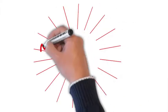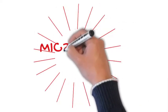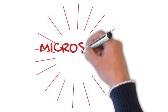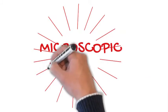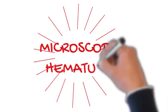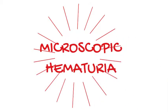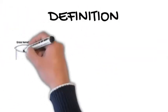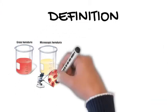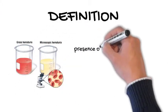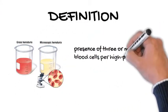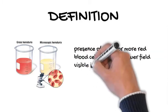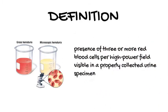Welcome to Dr. Vick's Academy. Today we will be talking about the assessment of asymptomatic microscopic hematuria in adults. Microscopic hematuria is defined as the presence of three or more red blood cells per high power field visible in a properly collected urine specimen.